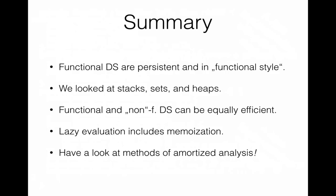In summary, functional data structures rely on persistence and of course use functional style. We have looked at stacks, sets, and heaps or priority queues. Even though functional data structures may involve a fair amount of path copying, they can be equally efficient as in an imperative setting. We need an entirely different style and a different way of analyzing runtime complexity. You are welcome to look at amortized analysis further, as it seems to be the really interesting part of this topic.